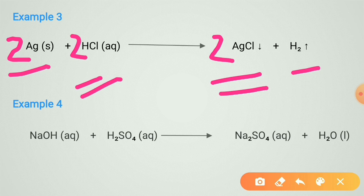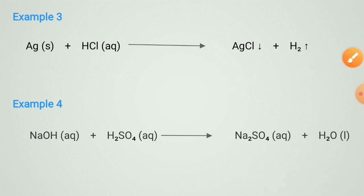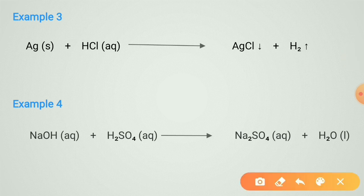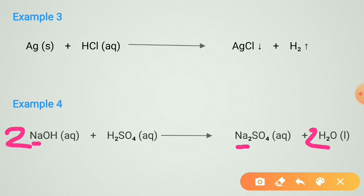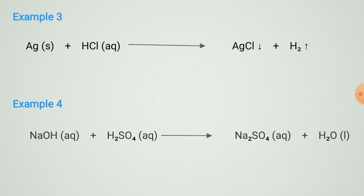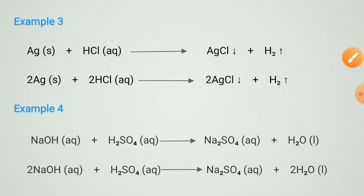Next example: NaOH + H₂SO₄ → Na₂SO₄ + H₂O. Sodium: one in the reactant but two in the product, so put two on the NaOH side. Now oxygen and hydrogen on the reactant side have increased, and the product side is less, so put two on the H₂O side. Count the atoms — they are same. The equation is balanced.